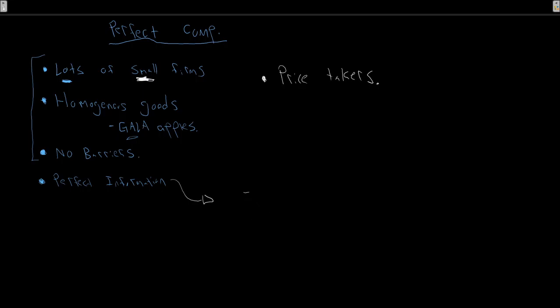The other point comes from our perfect information: all firms have identical cost structures. This is an artifact of perfect information — they all have access to the exact same labor, the exact same technology, the exact same capital, so they have identical cost structures. The cost curves would be exactly the same for every single firm in the market because they all have access to the same information.